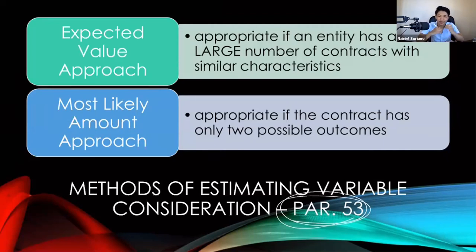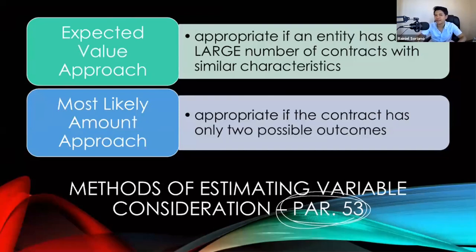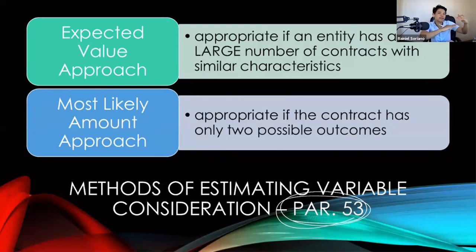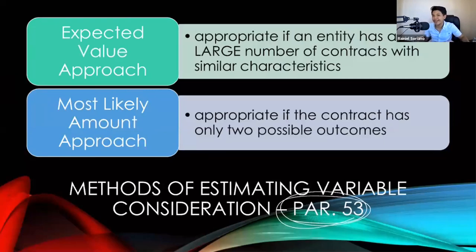If the problem is silent about which method to use and you only have two possible amounts, use the most likely amount approach. If there are three or more possible amounts, always use the expected value approach. Under the expected value approach, the transaction price equals the sum of all possible amounts multiplied by their corresponding probabilities.